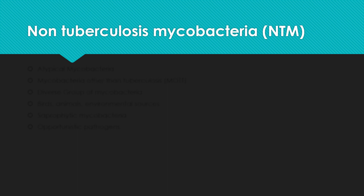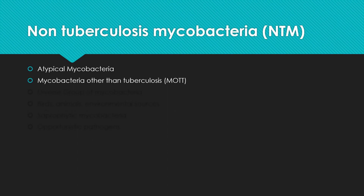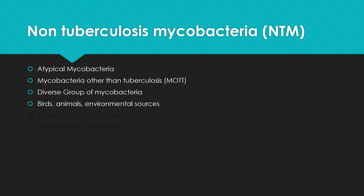Non-Tuberculous Mycobacteria is also called Atypical Mycobacteria, or Mycobacteria Other Than Tuberculosis, that is called MOTT. These Non-Tuberculous Mycobacteria are a diverse group of Mycobacteria that are isolated from birds, animals, and environmental sources like soil and water. Some species are saprophytic Mycobacteria which do not cause any disease in humans, while the majority of members of this group are opportunistic pathogens which can cause disease in patients with lower immunity.